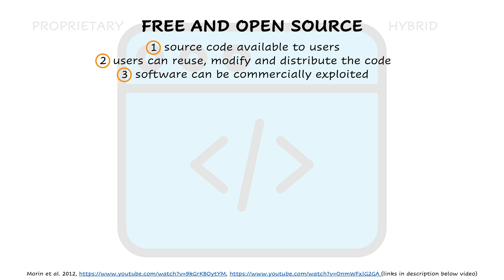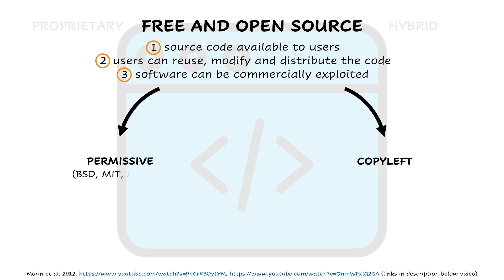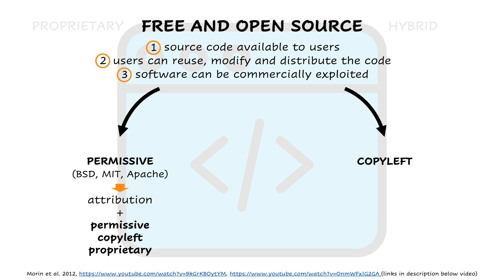Free and open source licenses can be divided into two groups: permissive and copyleft. Permissive licenses include, for example, BSD (Berkeley Software Distribution), MIT, and Apache. They mainly require one thing: attribution. This means that those who use, modify, or extend our code have to explicitly reference our work, but beyond that they can release their software containing ours with whatever license they prefer — permissive, copyleft, or proprietary.